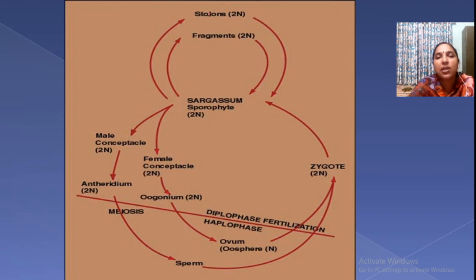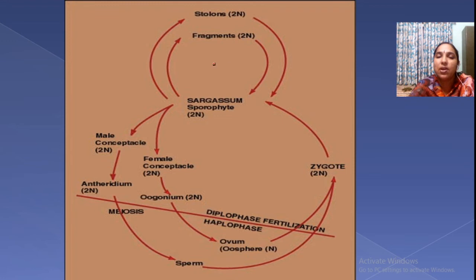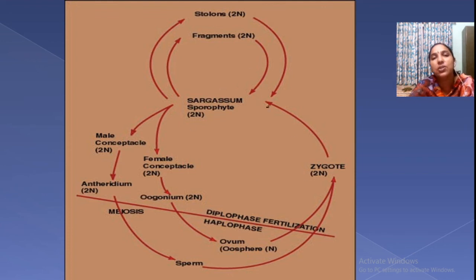Vegetative reproduction is by fragmentation and by stolons — structures produced in the root region, which is very rare. Both the male antheridium and oogonium are diploid. After meiosis, sperm or androzoids are produced; after meiosis, eggs or ova are produced. Fertilization gives a diploid zygote, which germinates into a new Sargassum. This is the typical life cycle of Sargassum.